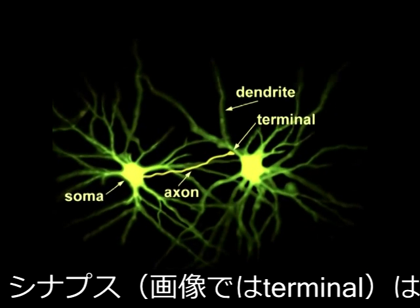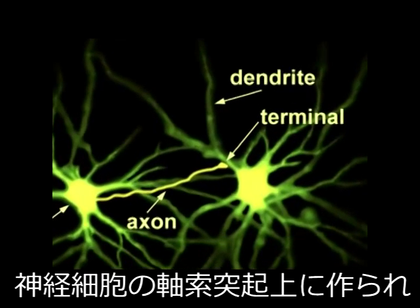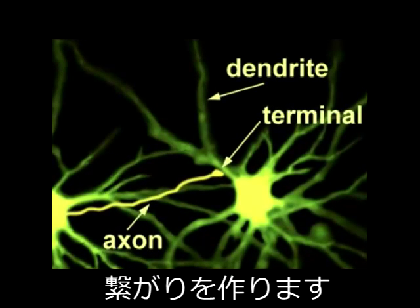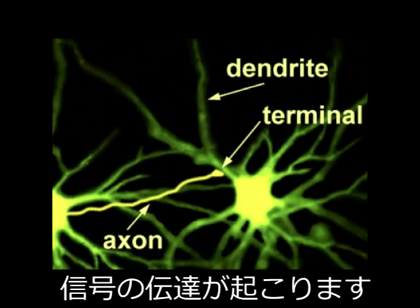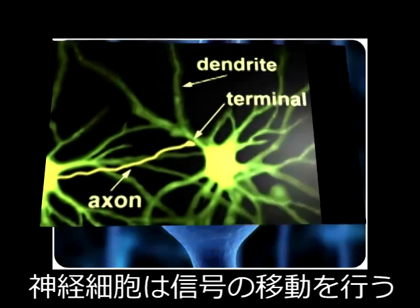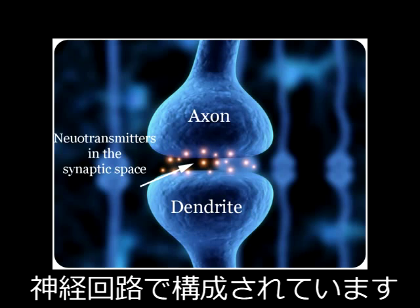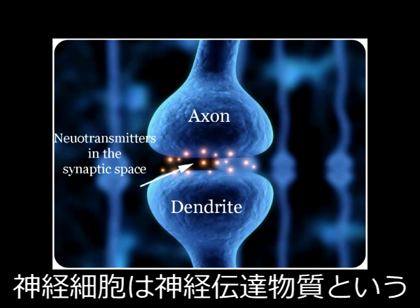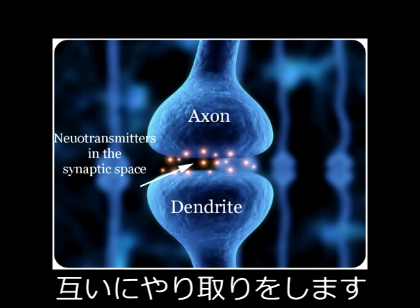A synapse, labeled here as the terminal, forms when the axon of one neuron forms a connection with the dendrite extension of another neuron. This is the area where signals will pass from neuron to neuron. Neurons are organized into neural circuits through which neural signals are transferred.